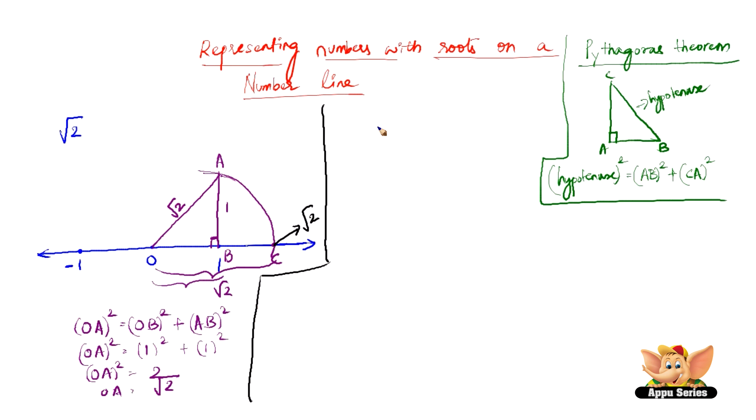So let us now see how to represent root 5 on a number line. Before we go into the number line, let us work out the mathematics. We need two numbers such that the square of them is 5. Only then can we get root 5. So it happens to be 2 squared plus 1 squared.